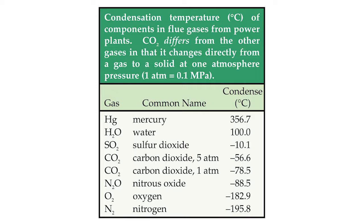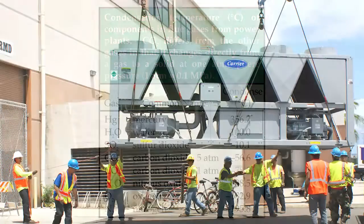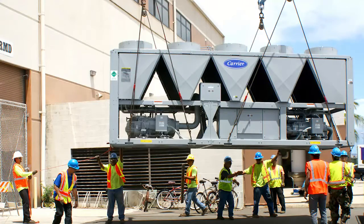Specifically, cooling a gas stream to below minus 88.5 degrees Celsius removes mercury, water, sulfur dioxide, carbon dioxide, and nitrous oxide, yet allows nitrogen and oxygen to pass. Cooling large volumes of flue gas to these temperatures requires a prohibitive amount of energy,